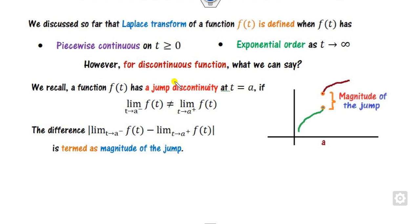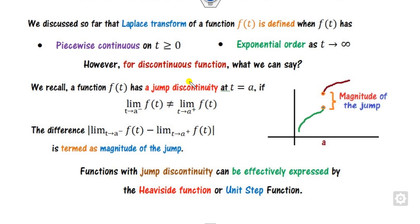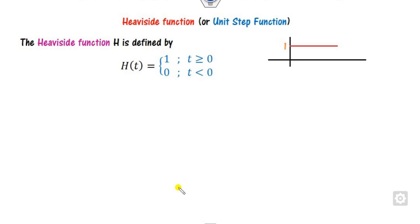Whenever there is a function of discontinuous kind, we will always think about expressing that function in terms of the unit step function, also called the Heaviside function. How can you do that? First, let us discuss what the unit step function or Heaviside function is. The function h is said to be the Heaviside function, denoted h(t): it equals 1 whenever t is greater than 0, and 0 otherwise.